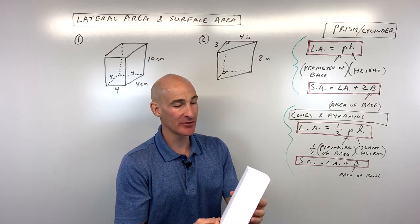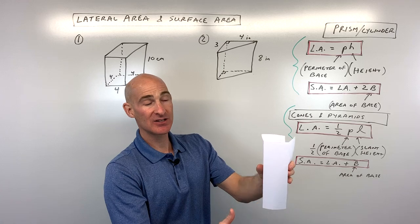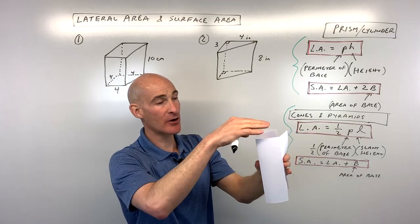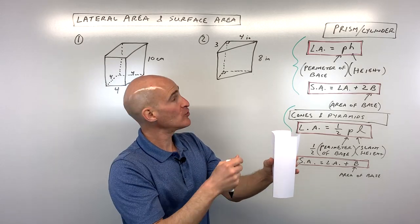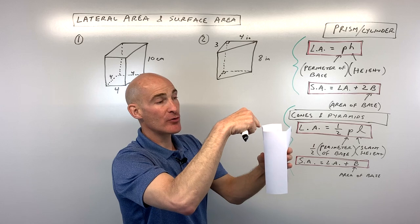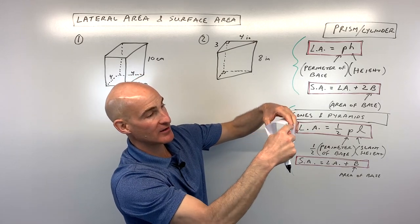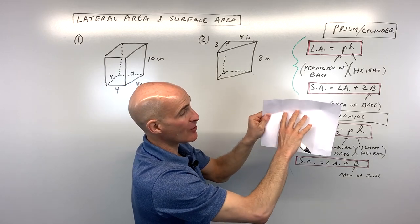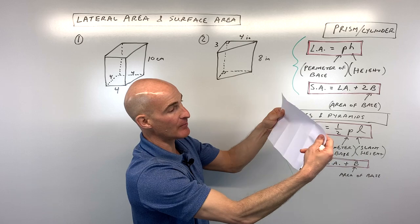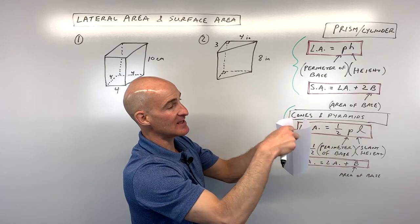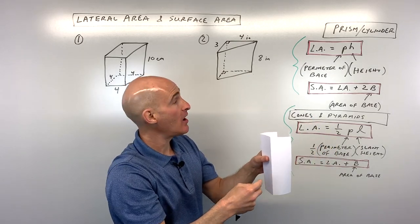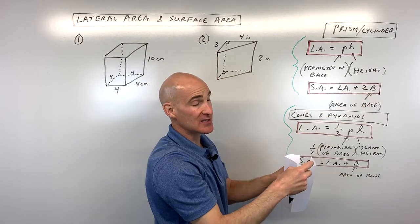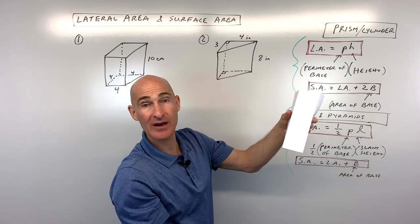To illustrate this, I took a sheet of paper and constructed it into a square prism — it's a square prism because the two parallel and congruent bases are squares. When we find the lateral area, we take the perimeter of the square base and multiply by the height; unfolding it gives us a rectangle. To find the surface area, we take that lateral area and add the area of the two bases.